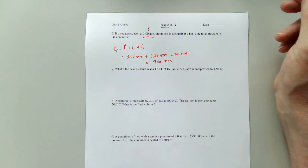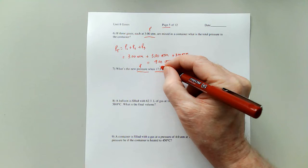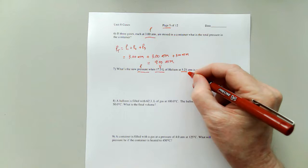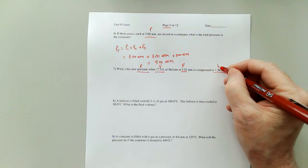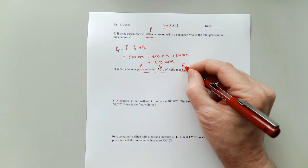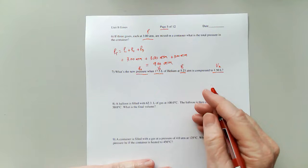In number 7, what is the new pressure? So we're looking for a P. 117.5 liters, that's a volume of helium at 5.23 atm, that's a pressure, is compressed to 1.50 liters, that's a volume. So these two go together because of the word at, so we'll make those P1 and V1, and we're looking for P2 being given V2. So that's a Boyle's Law problem.